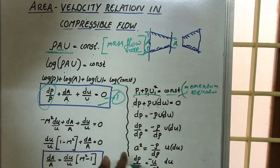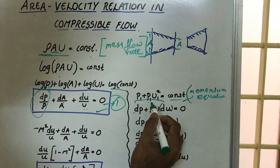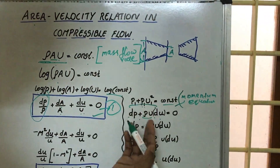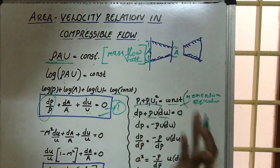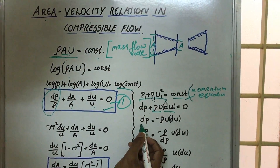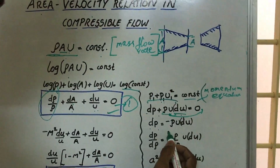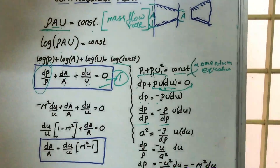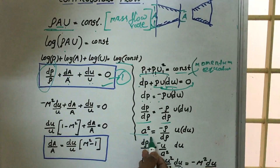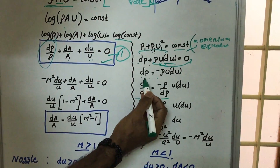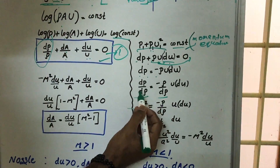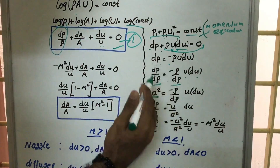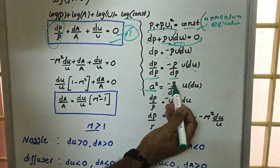Since the derivative of the constant is zero, and since ρu is a constant, we take ρu outside: so ρu·du equals zero. Then dp equals minus ρu·du. Dividing by dρ, we get dp/dρ equals minus (ρ/dρ)·u·du. We know that dp/dρ equals the square of the acoustic velocity, so a² equals minus (ρ/dρ)·u·du.